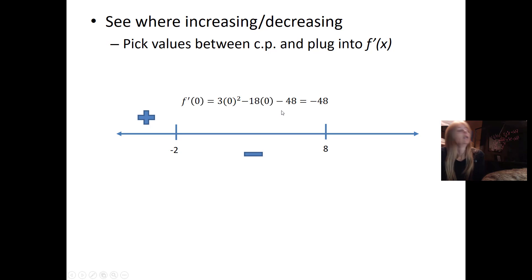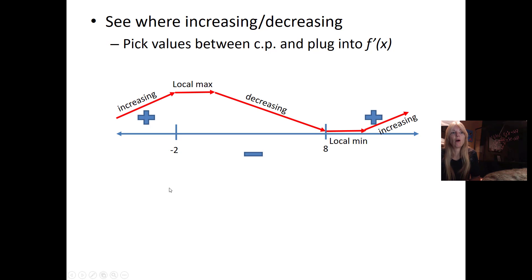I see I got a positive number, so that says the function is increasing in this interval. It hits a critical point where the derivative equals zero. Then I pick something in this interval. I always pick zero when you can, because zeros are nice. I picked zero because that's in this interval. I plug it in and I get a negative.